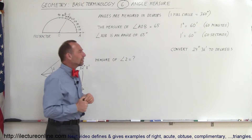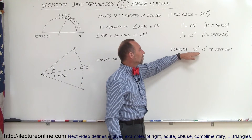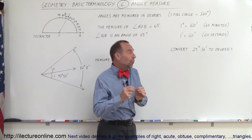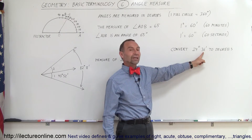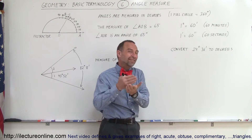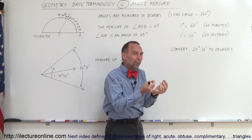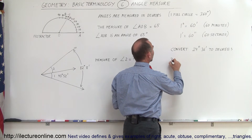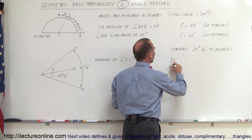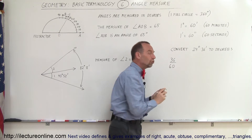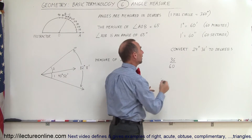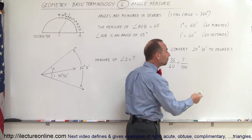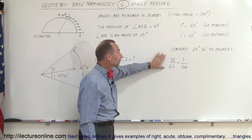Now let's say we have an angle measured to be 24 degrees and 36 minutes. What if we wanted to write that in degrees alone — what fraction of a degree is that? Remember, there are 60 minutes in a degree. To convert that to a fraction, we use the ratio: 36 over 60 equals what over 100 — that's how we convert from a fraction into a decimal.